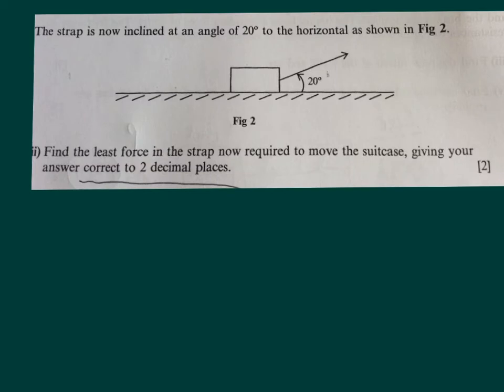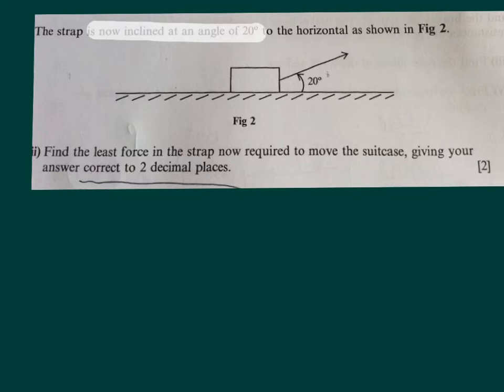When we read part 3 of the same question it says the strap is now inclined at an angle of 20 degrees. So we have a different phase in the calculations — a different phase in what's happening to the block or to the box. The strap is now inclined and we have a new diagram as shown. We're asked in part 3 to find the least force in the strap now required to move the suitcase, giving your answer correct to two decimal places. New forces always lead to new diagrams.